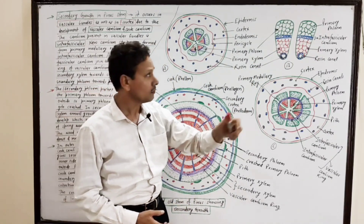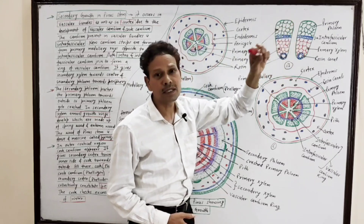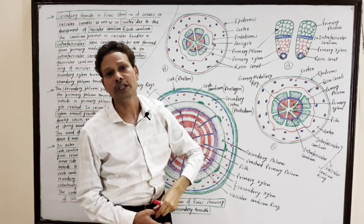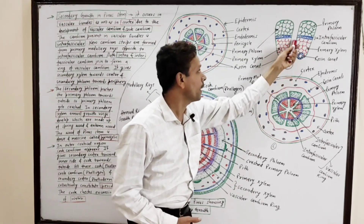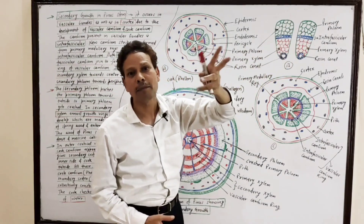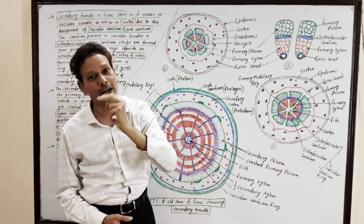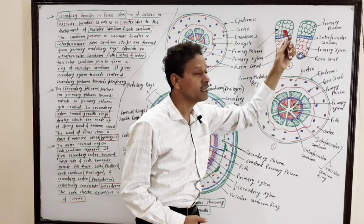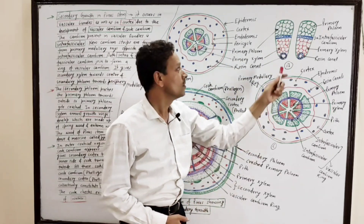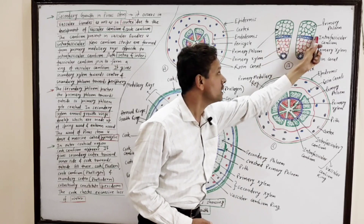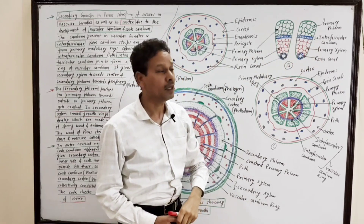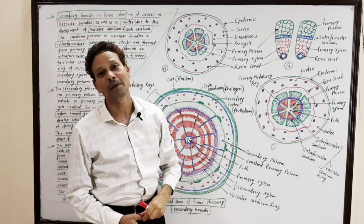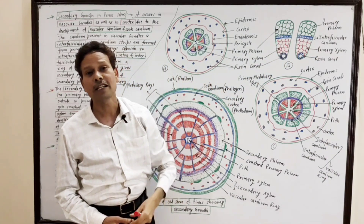Note down. Between these vascular bundles, a strip of parenchymatous tissue is present, and that strip is the primary medullary ray. In this primary medullary ray, some parenchymatous cells become meristematic, just opposite to the intravascular cambium. As a result, in this primary medullary ray, a cambium develops — that is interfascicular cambium.